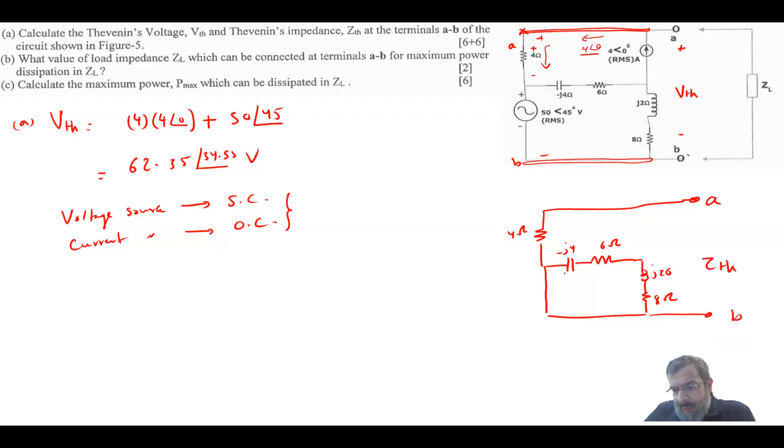Okay. Now when you look here to this impedance, it's basically 6 plus 8, 14 ohm. And minus J4 plus J20 plus J22. However, this impedance is basically short circuited.